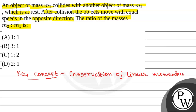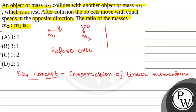We have a mass m1 which is moving with speed v1, and it collides with another object of mass m2 which is at rest. So v2 is equal to 0. Before collision, m1 is moving with speed v1 and m2 is at rest, that is v2 is equal to 0.